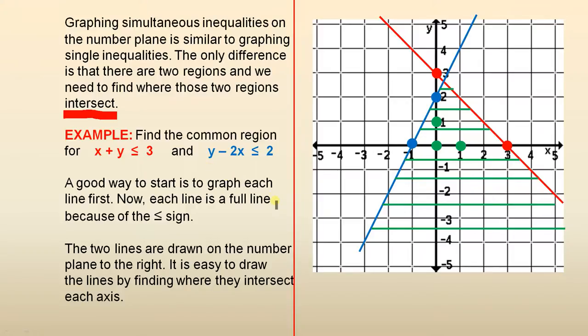A good way to start is to graph each line first. Now, each line is a full line because of the less than or equal to sign. Once you have the equal to sign there, it's a full line, and that's the same in each case.